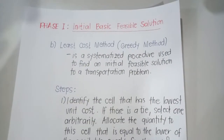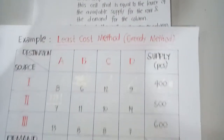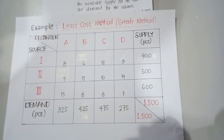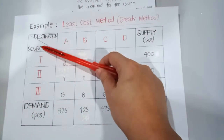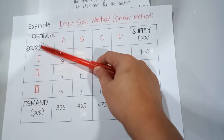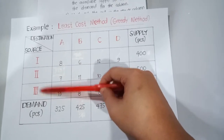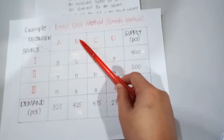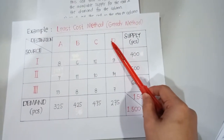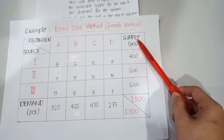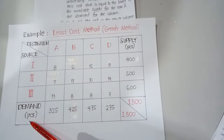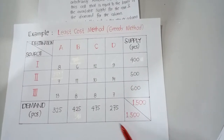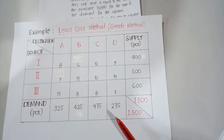In order to better understand the least cost method, let us look at our example. As you can notice, we have a source column with three sources: source 1, 2, and 3. We also have destination columns, denoted by points A, B, C, and D respectively. The last column is the supply column in terms of pieces, and the last row is the demand row, also in pieces. This is an example of a balanced transportation problem.